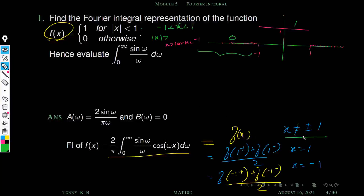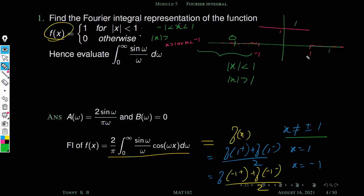We have four cases. When |x| < 1, the Fourier integral equals f(x) itself because the function is continuous throughout that interval — there is no discontinuity. When |x| < 1 means −1 < x < 1, not including ±1, so the Fourier integral equals the function value, which is 1.